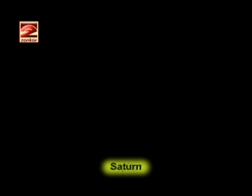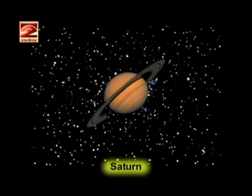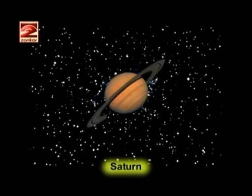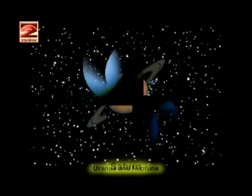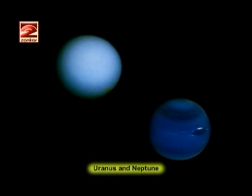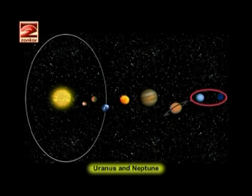Saturn has rings around it and its density is less than that of water — meaning if there were a large enough ocean of water, this huge planet would float in it. Uranus and Neptune are the outermost planets of the solar system.